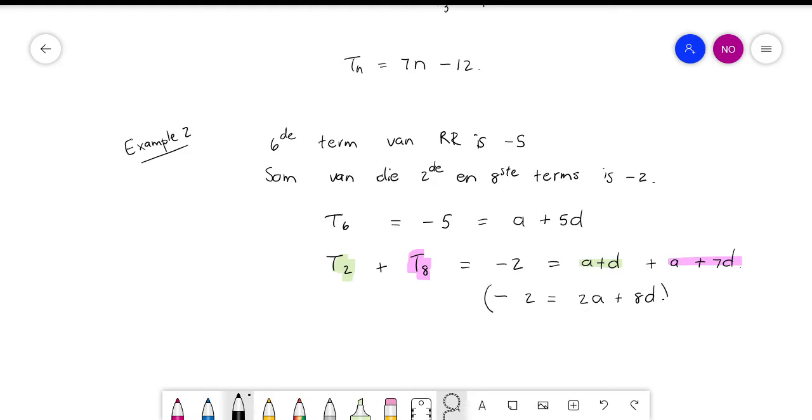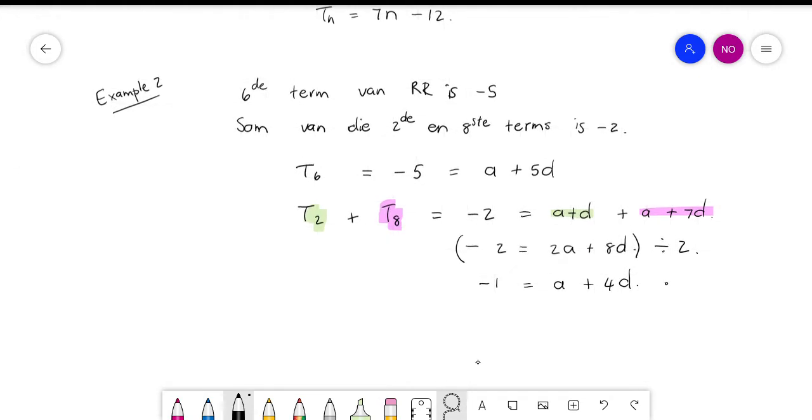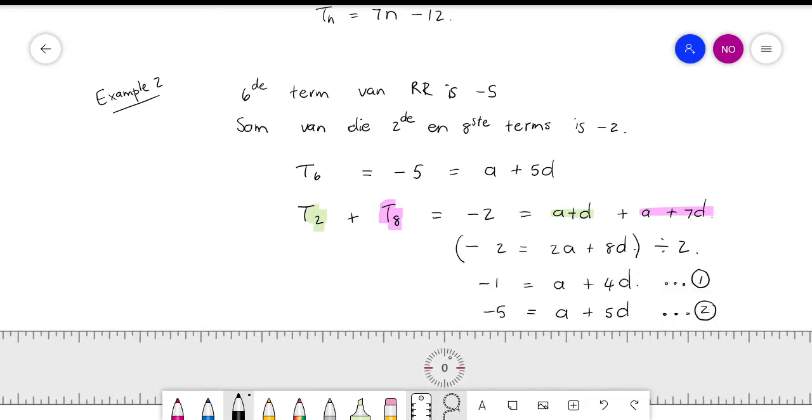And then this one happens to be divisible by 2, so why not? Let's just do it anyway. So that's my one equation, and then I'm going to copy my other equation in here. And once again, I'm going to subtract the two.